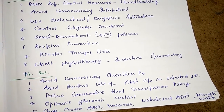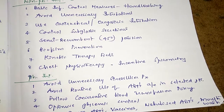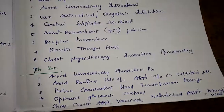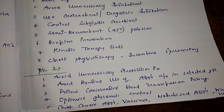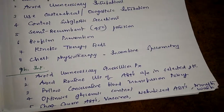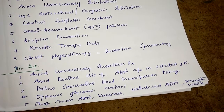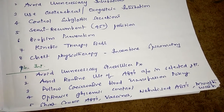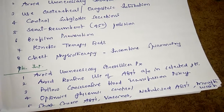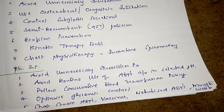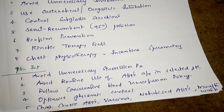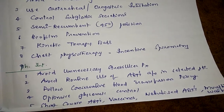Blood glucose should be maintained between 80 to 110 mg per deciliter. A short course of antibiotics is used. Nebulized antibiotics and vaccines against Haemophilus influenzae, Streptococcus pneumoniae, and influenza virus are considered. Chlorhexidine solution rinses may lower the incidence of hospital-acquired pneumonia.